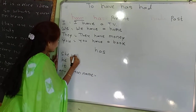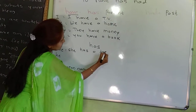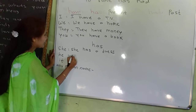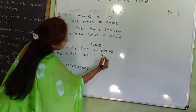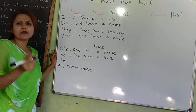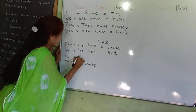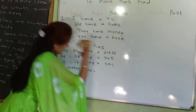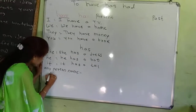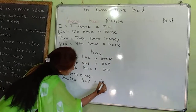Has. She has a dress. He has a badge. It — belonging to any kind of animal or a thing's name — it has a dress. And for a person's name, for example Radha, Radha has a dress.